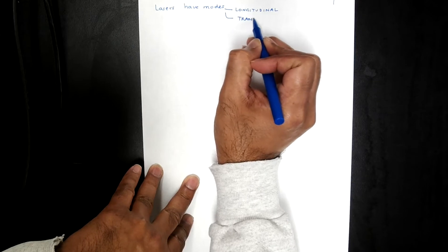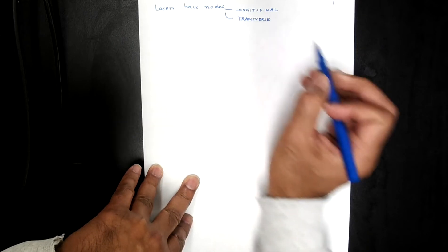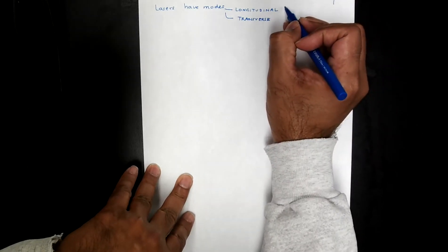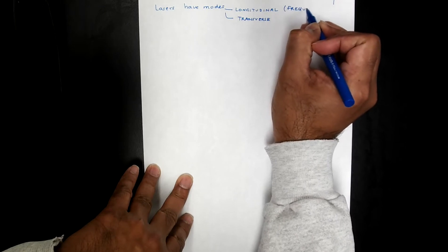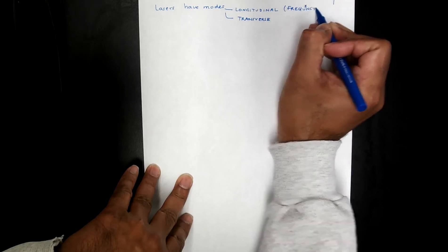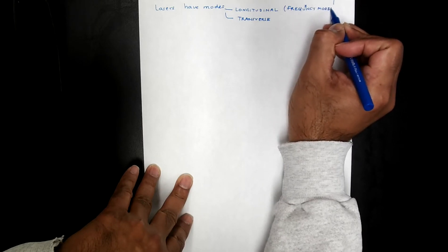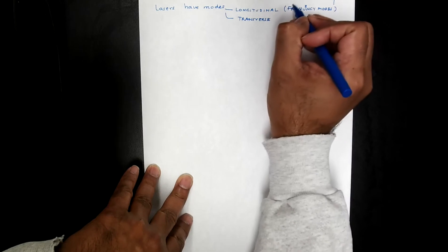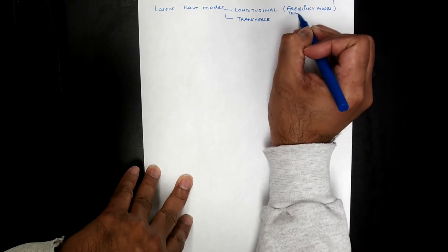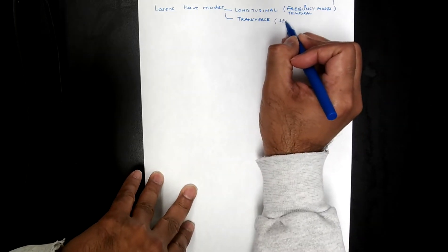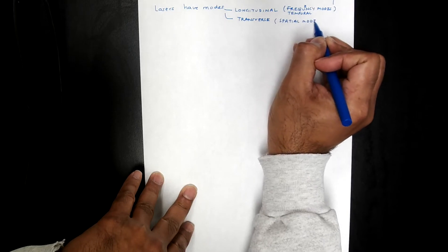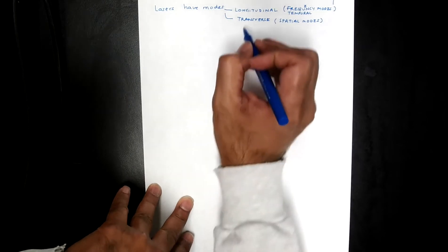I'm doing a quick recap. The longitudinal waves, also called longitudinal modes, are also called frequency modes, and these are also called temporal modes or temporal frequency modes. The transverse modes are called spatial modes.